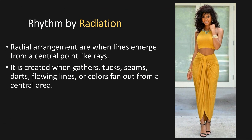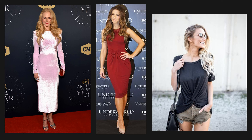Rhythm by radiation is a radial arrangement where lines emerge from a central point like rays — think of a sunburst. It's created when gathers, tucks, seams, darts, or flowing lines fan out from a central area. In this example, you can see it at the waist gathering and then flowing down toward the thigh. Nicole Kidman has a knot in the middle of her bust that fans outward. Kate Beckinsale's red dress has a knot in the center that fans up toward her chest and down toward her hips. The last example is a t-shirt that's twist-knotted so it moves upward.